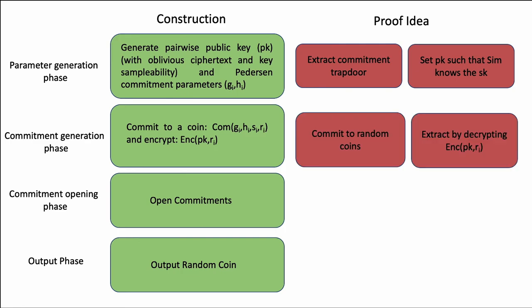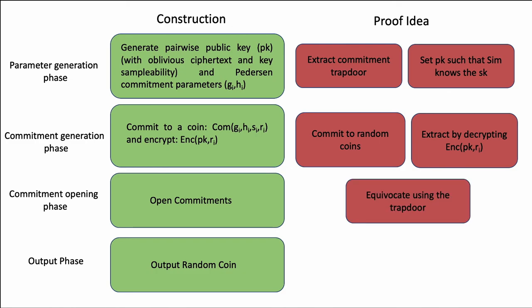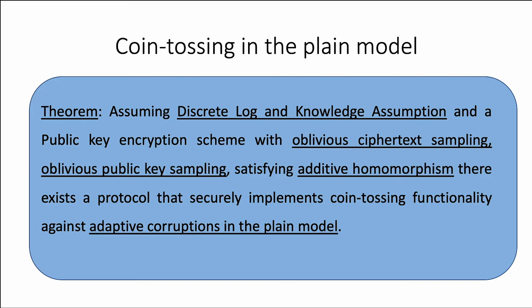In the commitment generation phase, when the simulator has to generate commitments on behalf of the honest parties, it commits to some random coins and extracts the adversaries' commitments by decrypting. Then in the next phase, it equivocates its own commitments using the commitment trapdoor. The final result is that assuming discrete log and knowledge assumptions, and a public key encryption scheme with oblivious ciphertext and public key sampling that is also additively homomorphic, there exists a protocol that securely implements coin tossing functionality against adaptive corruptions in the plain model.